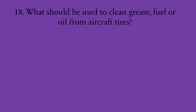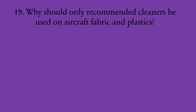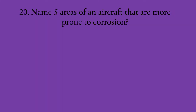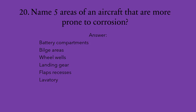Number eighteen: what should be used to clean grease, fuel, or oil from aircraft tires? Soap and water. Number nineteen: why should only recommended cleaners be used for aircraft fabrics and plastics? To reduce degradation of the material. Number twenty: name five areas of the aircraft that are more prone to corrosion. There are several — feel free to memorize any five. They include battery compartments, bilge areas, wheel wells, the landing gear, flap recesses, the lavatory, the galley, and various other areas where water might be entrapped.